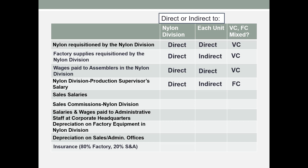Sales salaries are paid to represent both the nylon and the blended division. Therefore, those salaries would be indirect to the nylon division and indirect to each unit. You could allocate it, but it would still be an indirect cost. Salaries, unlike wages, are considered to be a fixed cost.